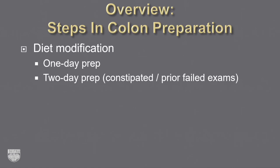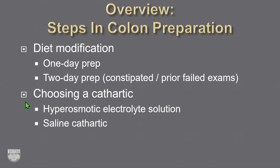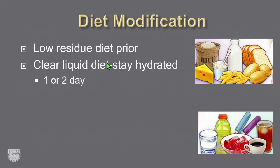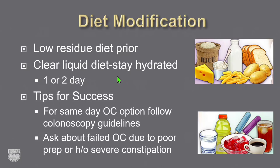The overview of steps in colon preparation: first is diet modification. We typically do a one-day prep. We have an intake questionnaire — if the patient had a failed colonoscopy due to retained stool or has chronic constipation, we switch to a two-day prep. Tell the patient: if you're having formed stool on the day of your exam, give me a call. Then choosing a cathartic — hyperosmotic electrolyte solution or saline cathartic — and choosing a tagging agent.